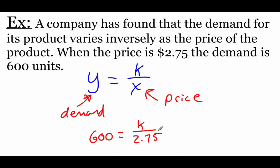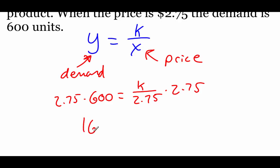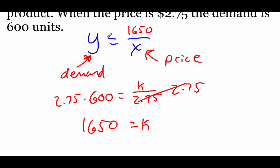To find k, we multiply 2.75 over to the other side. Punching that into the calculator gives k equals 1,650. Going back to our equation and replacing k, our final equation is y equals 1,650 divided by x.